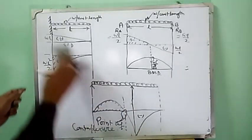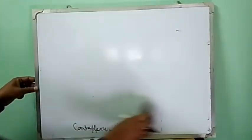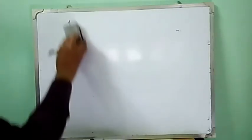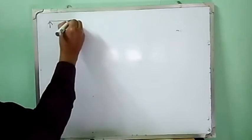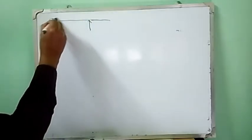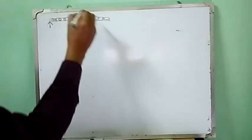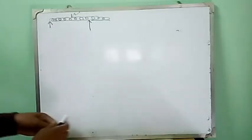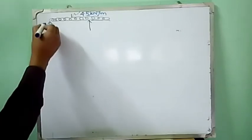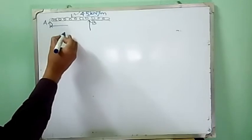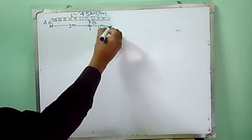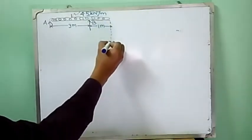Let us take a problem. An overhanging beam where the span between two simply supported points is three meters and the overhanging portion is one meter. Draw the shear force and bending moment diagram.